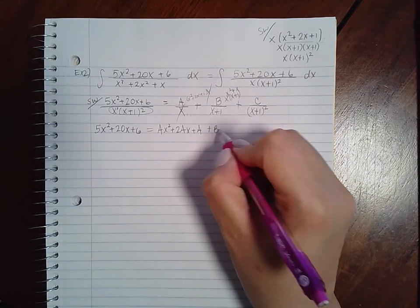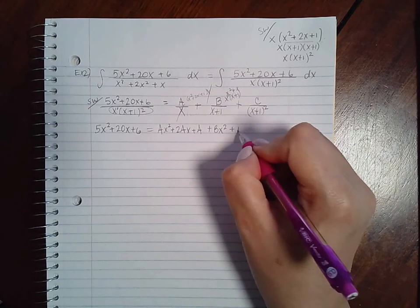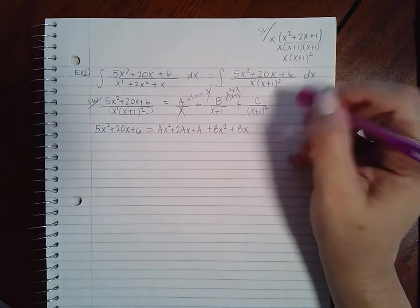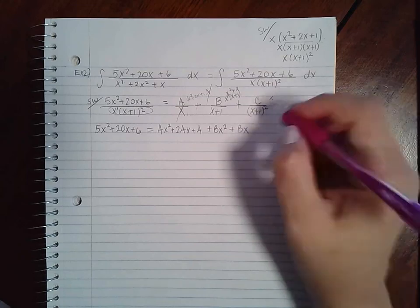So if I distribute my B to that, I get Bx squared plus Bx. Same thing here. If I multiply by this, the x plus 1 squared will cancel, but I'll still have to multiply by x.